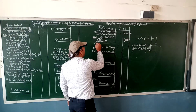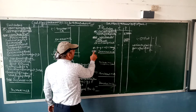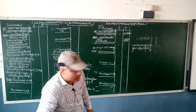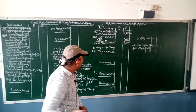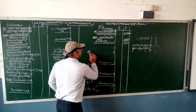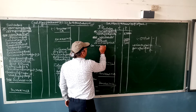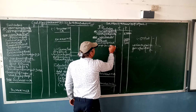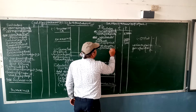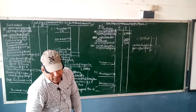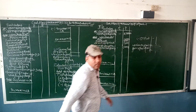Next, loss on sale of machinery — we look at non-operating items. Loss on sale of machinery is 7,000 rupees, so we will add it. Next, profit on sale of land — this is non-operating income, so we will minus it. How much is profit on sale of land? 3,000 rupees, so minus 3,000.